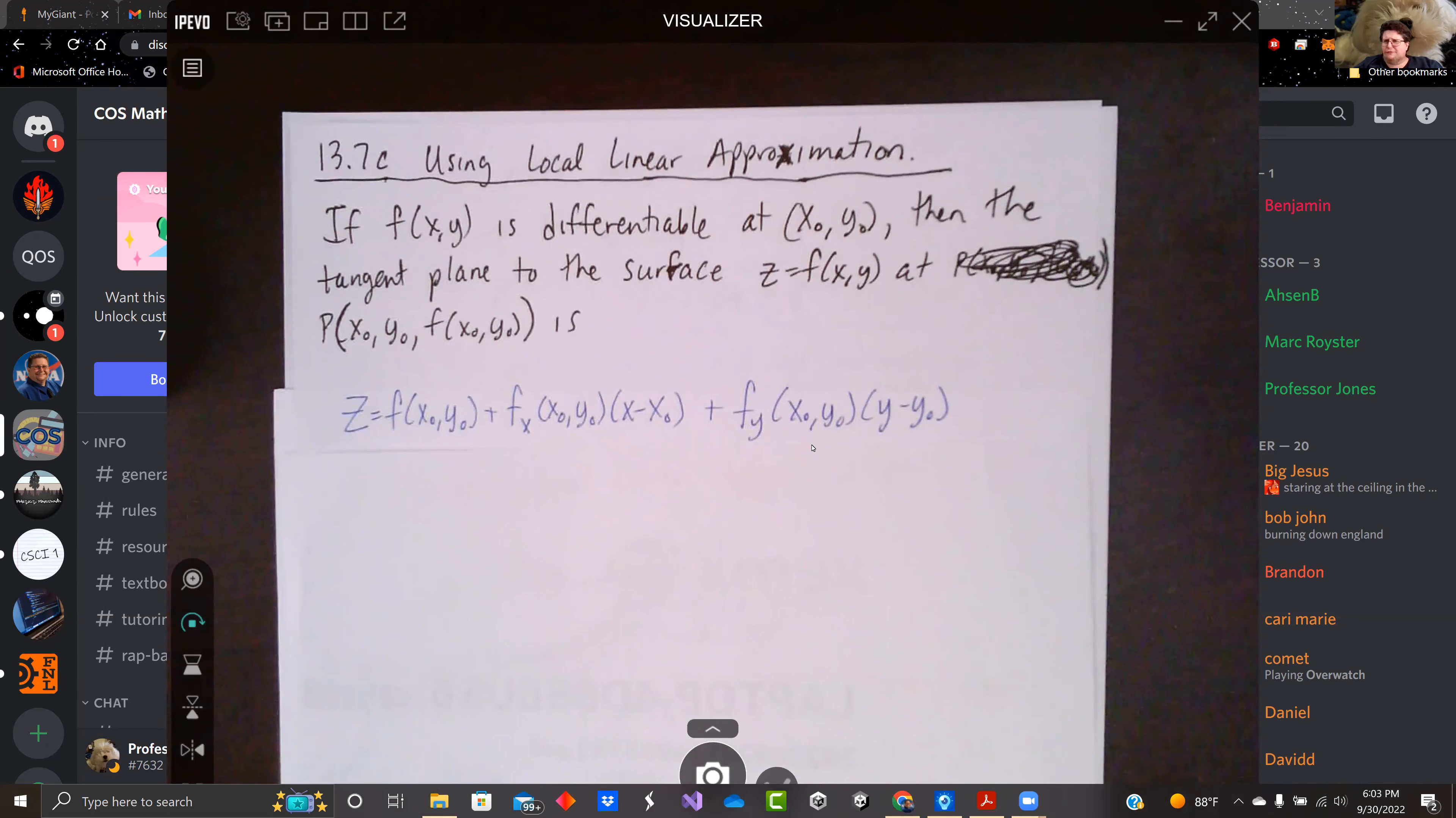Last section, we showed how to find the tangent planes, did some examples. In this section, we're going to look at doing it another way with local linear approximation. We did this a little while ago. Was it 13.2 or 13.3? Maybe it was chapter 12. It's been a little while.